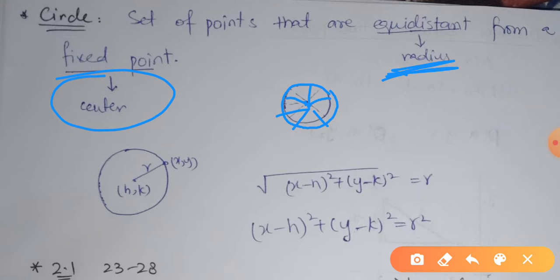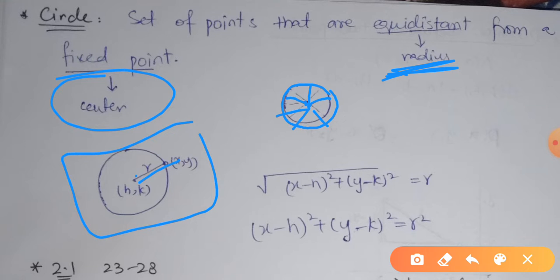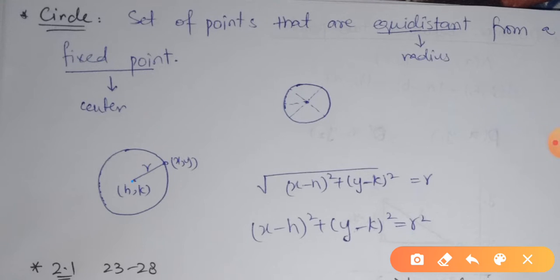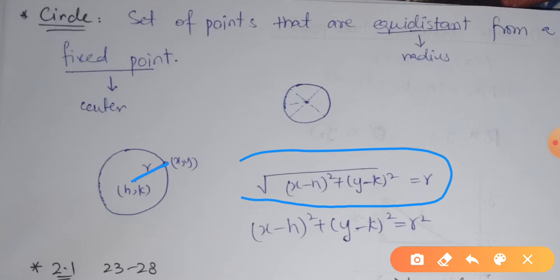Now we are going to derive the equation of a circle. Let us assume we have a circle centered at a fixed point (H, K) with radius R. Let X, Y be an arbitrary point of the circle. We know that the distance between these two points must be equal to the radius R. So applying the distance formula on these two points.